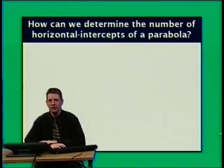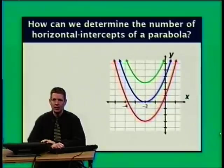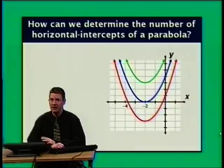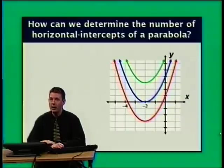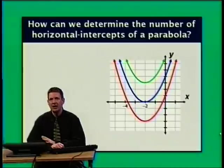Let's talk about the horizontal intercepts of a parabola. How can we determine the number of horizontal intercepts? If the vertex is below the x-axis, the parabola has two horizontal intercepts. When the vertex is on the horizontal axis, there is one horizontal intercept. When the vertex is above the horizontal axis, the parabola has no horizontal intercepts. Is there something in the formula we can look at to determine this?